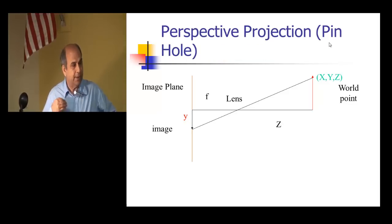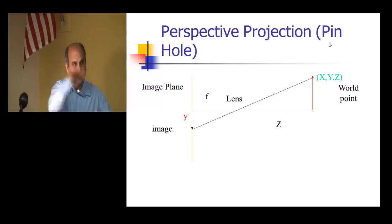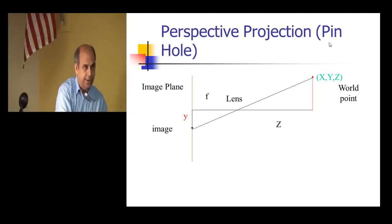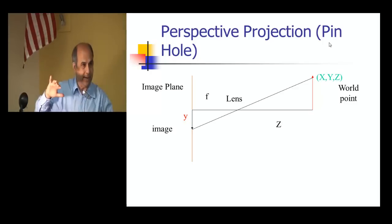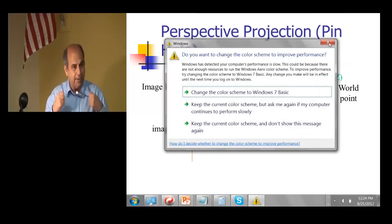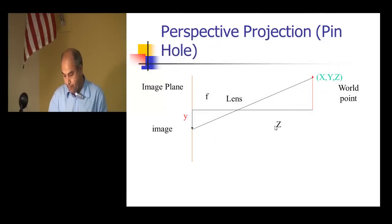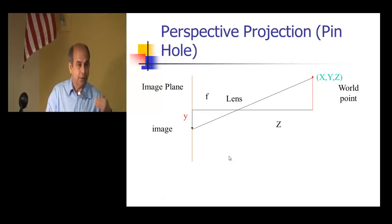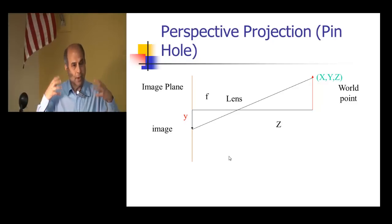Something you will hear again and again in this class: the world is made of 3D — three dimensions, X, Y, Z. When you take a picture, the 3D is mapped to 2D because a picture is flat. Whatever techniques we develop will use this understanding that we are projecting 3D to 2D. We are in a way losing one dimension, and that's why computer vision is hard — because we have a 2D image and we want to talk about what is in 3D.